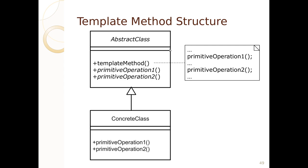The UML for a template method structure looks like this. We'll have an abstract class. It has a template method and it calls primitive operation one and primitive operation two. These primitive operations should be abstract if they're meant to be implemented. A concrete class that wants to take advantage of this template method will implement each of these primitive operations. The template method usually will call the primitive operations. Good places to put these primitive operations are before and after a lot of work, or around some computation.